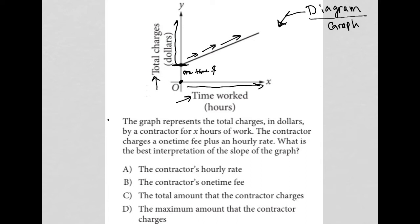The contractor charges a one-time fee plus an hourly rate, so here's where we get our hourly rate from. What is the best interpretation of the slope of the graph? I kind of drew, let me just erase all this. We can see it again. I kind of drew it intuitively there.